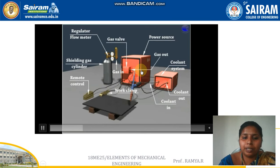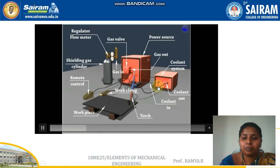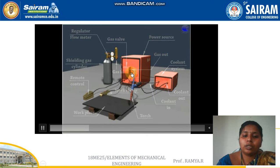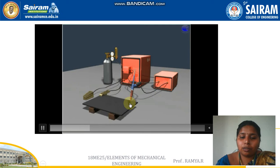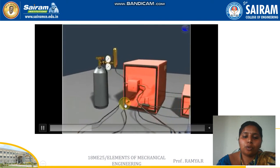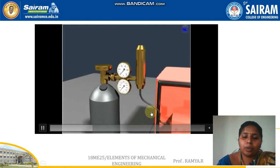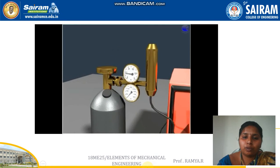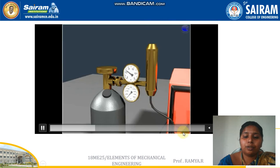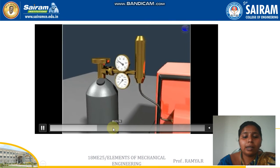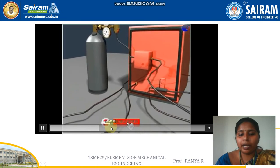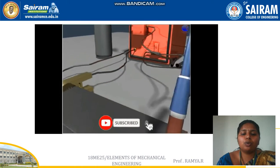The apparatus arrangement is similar for both welding types. There is an inert gas cylinder, a power source, and a coolant system. There is an electrode holder — one end of the power source is connected to the workpiece and the other end is connected to the electrode holder.